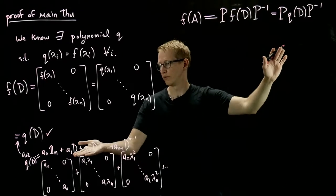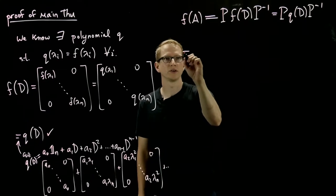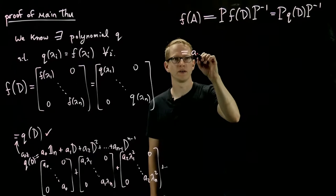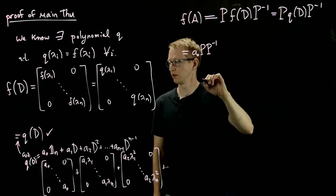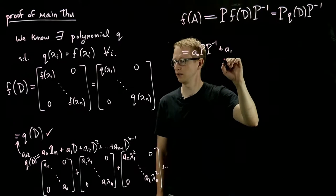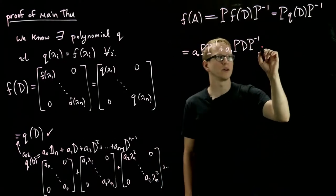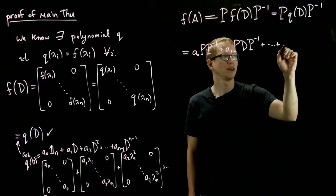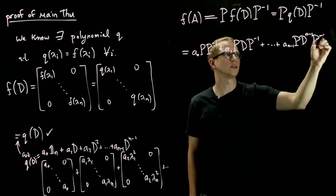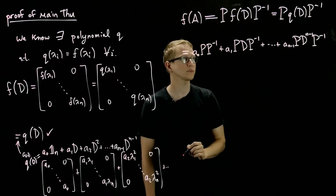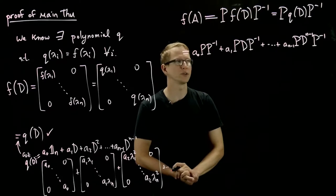Now we know what q of D looks like. It looks like this. And we also know what happens when we distribute P throughout. So we get something that looks like A0 P times P inverse, plus A1 P D P inverse, all the way up to A n minus 1 P D to the n minus 1 P inverse. That's just what that looks like when you distribute P and P inverse on both sides.